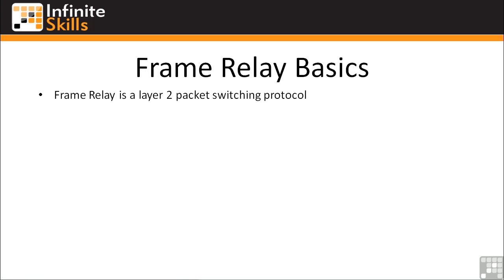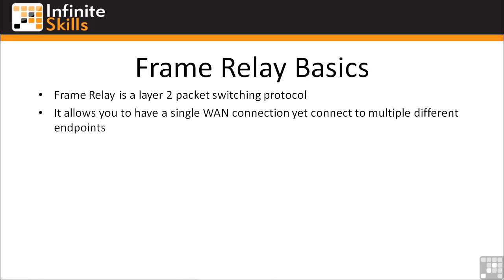Frame Relay is a Layer 2 packet switching protocol. The nice thing about Frame Relay is it allows you to have a single WAN connection at your data center or at all of your branches, yet connect to multiple different endpoints. Before Frame Relay, if you had a network with twenty-five different locations, you had to have twenty-five different point-to-point connections, all terminating into a single router or a few routers. You had to configure routes to all of those locations on each of those interfaces, and it became very unwieldy.